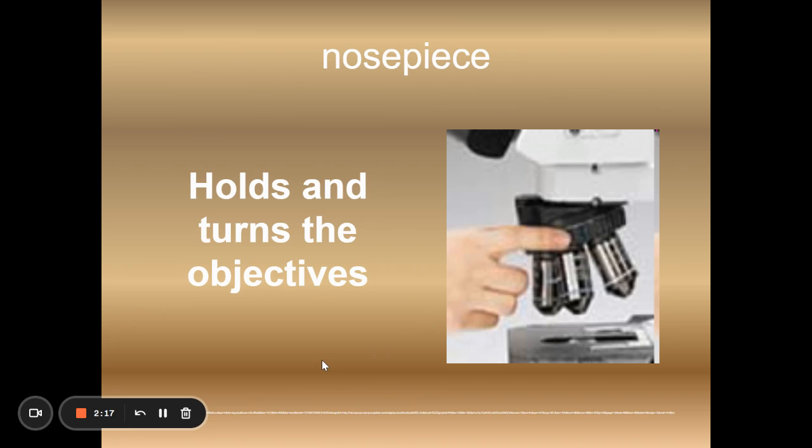With these three different objectives, you're going to want to change from one power to the next. And you will use the nose piece to do that. Make sure that your nose piece clicks into place. So you have to click the objective that you want into place. If not, you're going to be looking at darkness.